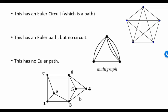This third diagram has no Euler path at all. It has way too many odd vertices — this is odd, this is odd, this is odd, this is odd, this is odd. So this is not going to be possible.